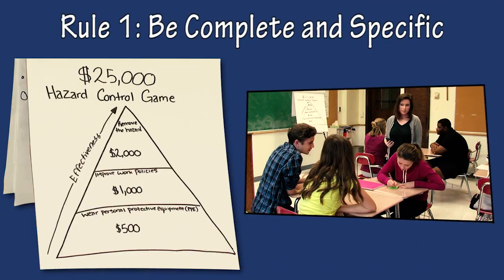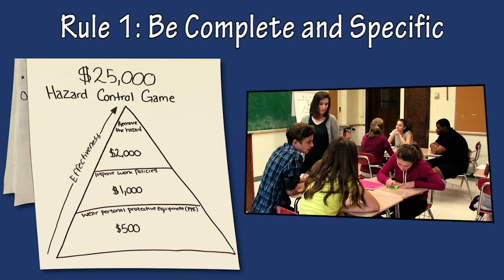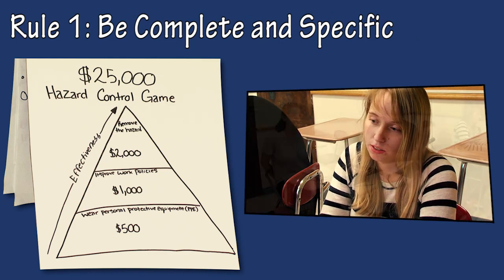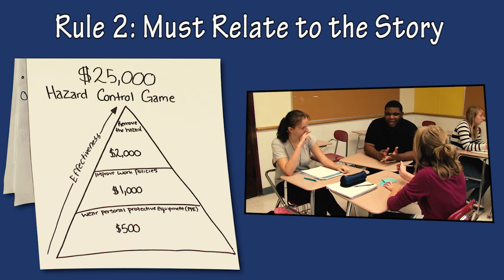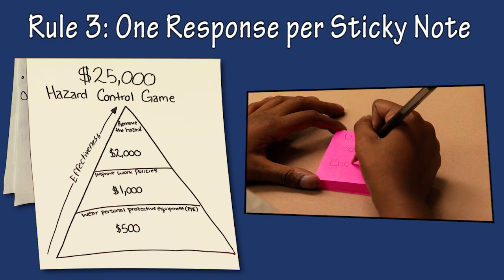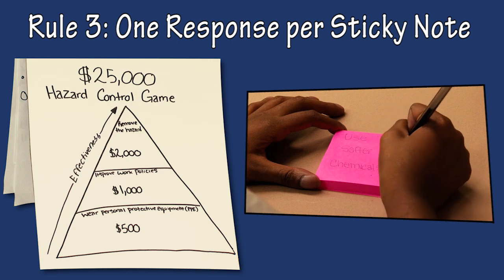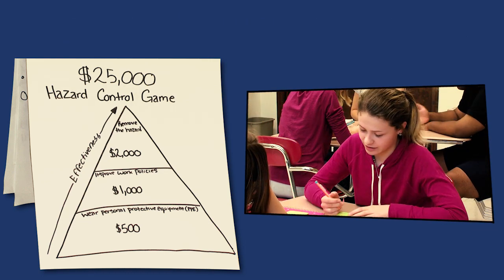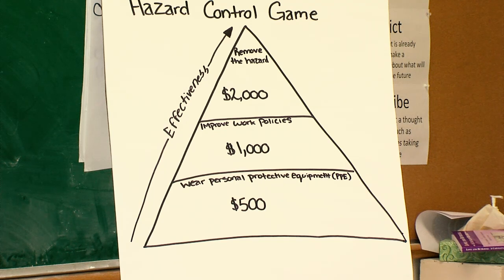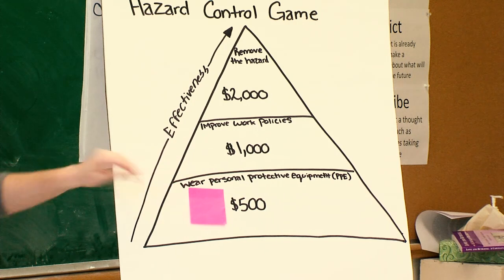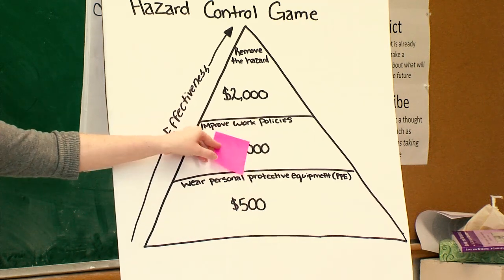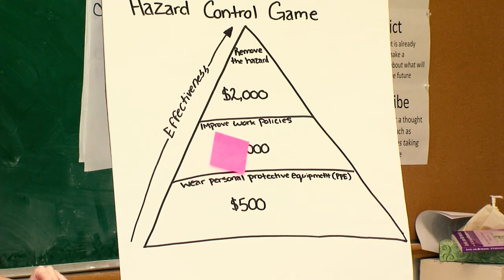Here are three rules. Rule one: your answers must be complete and specific. For example, if you just say 'training,' you won't receive any points — training about what? Be specific. Rule two: your answers also have to relate to the story I read. You can't make up details that weren't part of the story. Rule three: each response should be written on a separate sticky note — one response per sticky note. I need one person on your team to volunteer to write down your group's responses, and another volunteer from each group to be the runner. When I say time, it's your job to come up and place your team's responses in the appropriate category on the pyramid. If any of the teams put an answer in the wrong category, I'll move the sticky note to the right one and that team will receive points for that category.